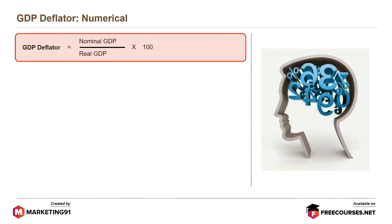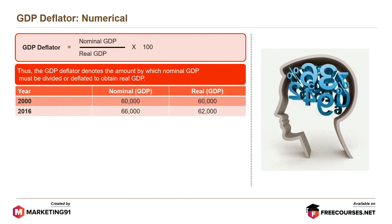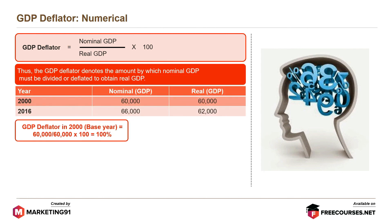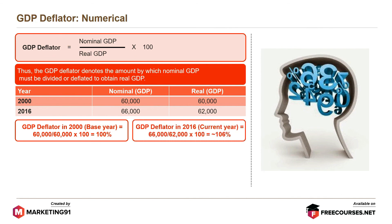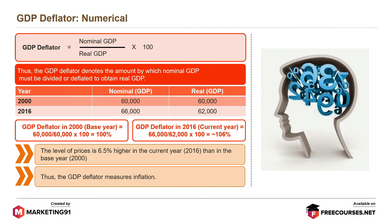GDP deflator equals nominal GDP divided by real GDP, multiplied by 100. Thus, the GDP deflator denotes the amount by which nominal GDP must be divided or deflated to obtain real GDP. For example, GDP deflator in 2000 (base year) equals 60,000 divided by 60,000 into 100, equals 100%. GDP deflator in 2016 (current year) equals 66,000 divided by 62,000 into 100, equals more than 106%. The level of prices is 6.5% higher in the current year 2016 than in the base year 2000. Thus, the GDP deflator measures inflation.